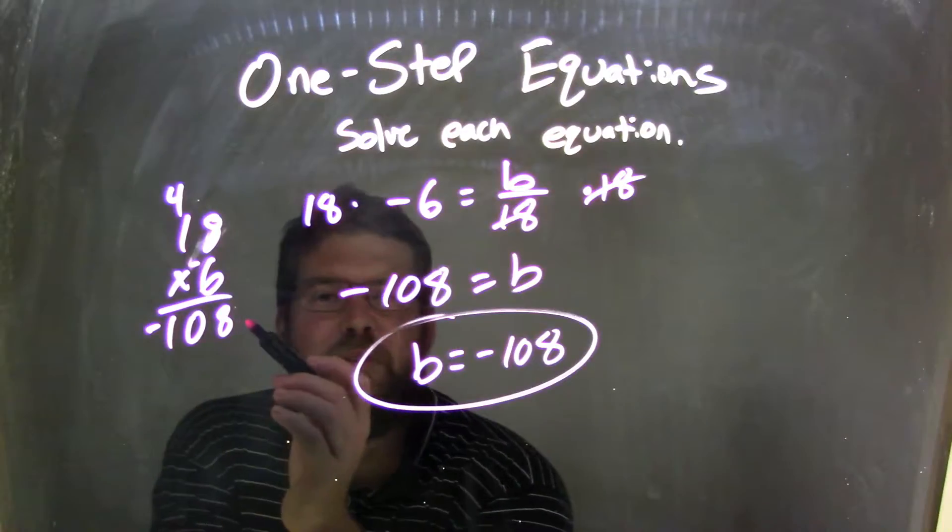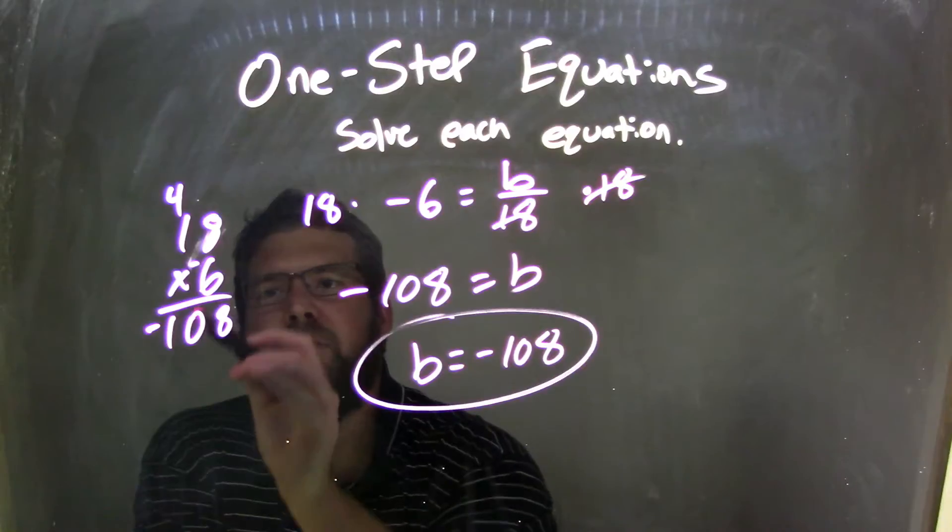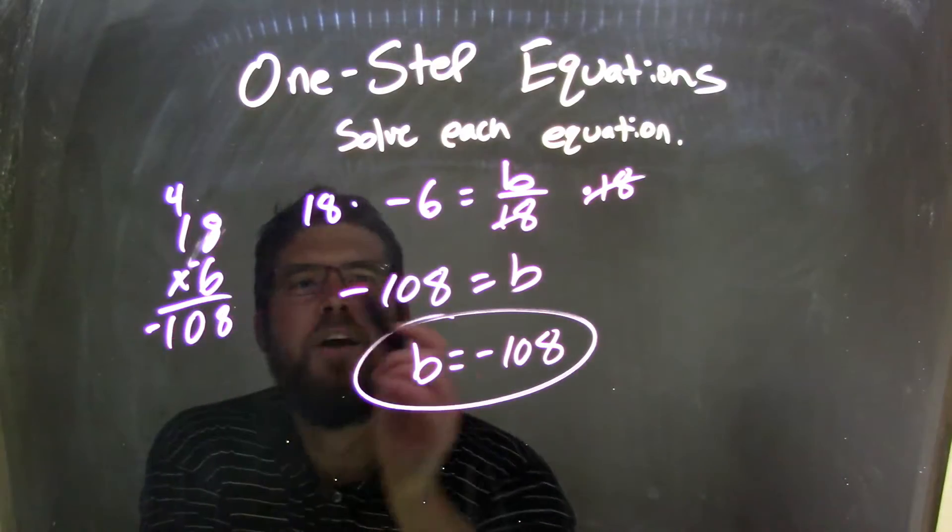6 times 8 is 48, 8 down here, 4 up there. 6 times 1 is 6, plus 4 is 10. We know it's negative. Positive times a negative is negative, so negative 108.